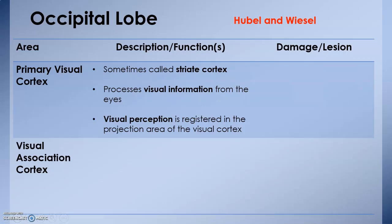In connection with this, we also have the visual association area. The visual association area helps us identify and make sense of the visual information from the eyes. So visual perception is to do with the primary visual cortex, but making sense of that perception, recognizing that information, that work is associated with the visual association cortex.